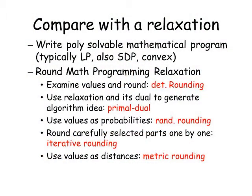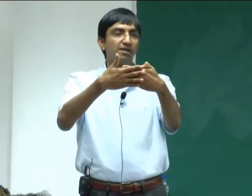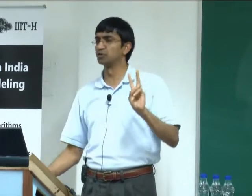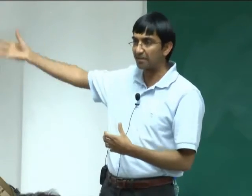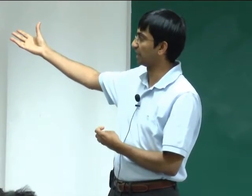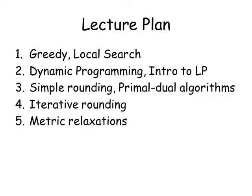These approaches go under the names: deterministic rounding, primal-dual (where you construct a pair of primal and dual solutions and keep them close without even solving the LP), randomized rounding, iterative rounding, and metric rounding. The two important slides to remember: when people design approximation algorithms, the main question is how to bound it — either look at an optimal solution via greedy, local search, dynamic programming, or look at a relaxation like a linear program, semi-definite program, or any solvable convex program.